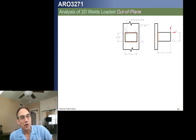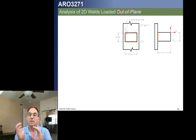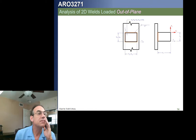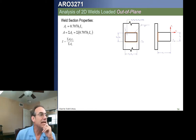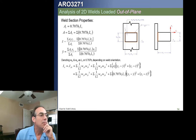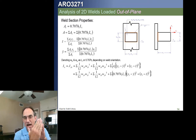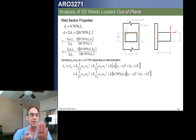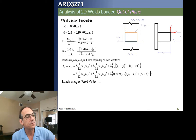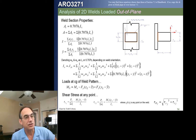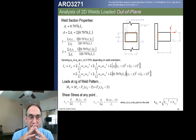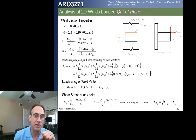For welds loaded out of plane, we follow a similar procedure but calculate bending properties about a different axis. The section property I about a given bending axis is the same as J about the corresponding plane. We move our load to the centroid and calculate the resulting stresses. It's important to correctly identify in-plane versus out-of-plane, otherwise you'll get incorrect results.